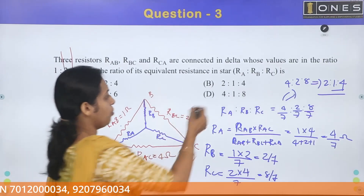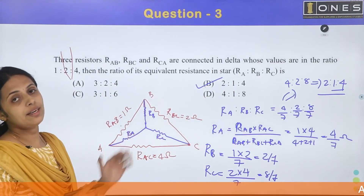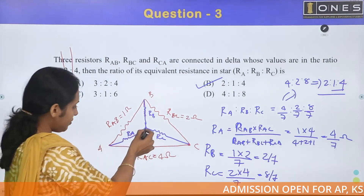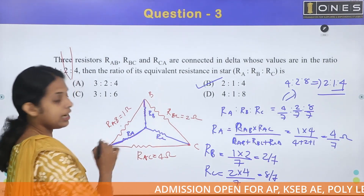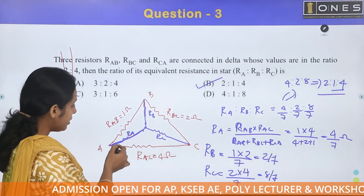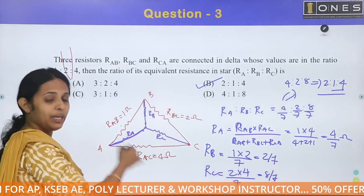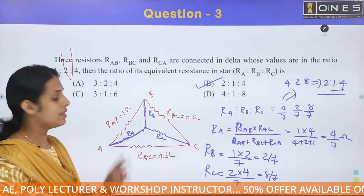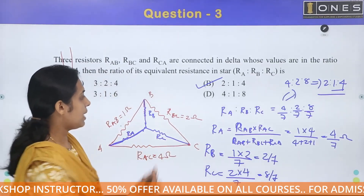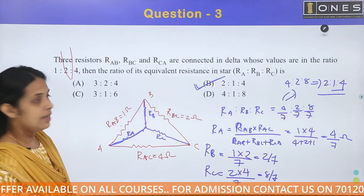The answer is Option B. We used the delta-to-star transformation formula where each star resistance equals the product of the two adjacent delta resistances divided by the total sum of all three delta resistances.